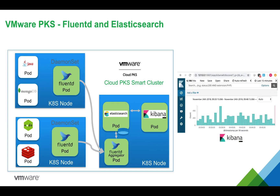Before we get started with the actual demo, let's first review a few concepts. A Kubernetes cluster consists of multiple nodes, and each node has pods running on them representing different microservices. FluentD leverages a special type of Kubernetes controller called DaemonSet, which ensures a copy of the FluentD pod is deployed on each worker node in the cluster. As nodes are added to the cluster, a FluentD pod is added to them automatically by the DaemonSet.